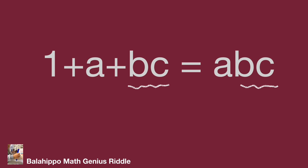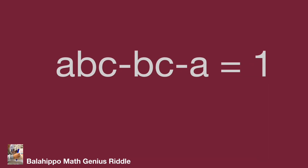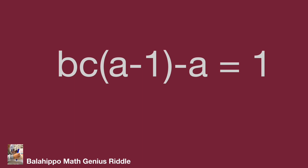While we treat bc as one item, then we can reduce the unknown items from three items to two items. So adjust the given equation, moving both bc and abc to the same side of the equation, so that bc plus a equals one.